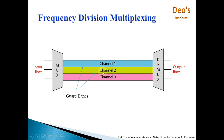If there are three channels, two guard bands will be required. Similarly, if there are N channels, you will require N-1 guard bands to separate those channels. The entire combined signal will appear at the demultiplexer, and the demultiplexer will separate out the specific signals from the combined signal.